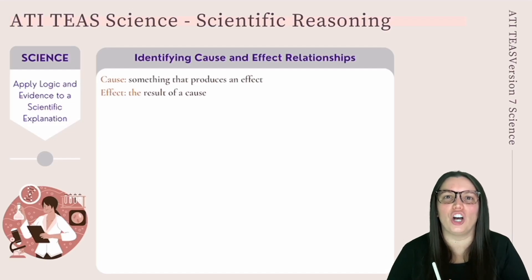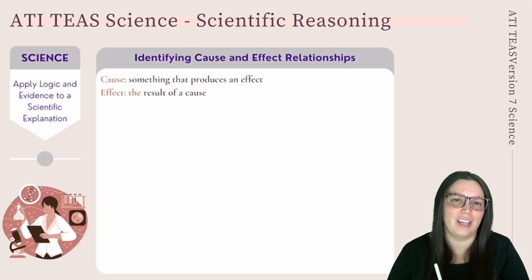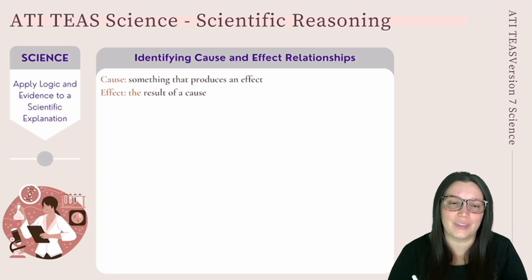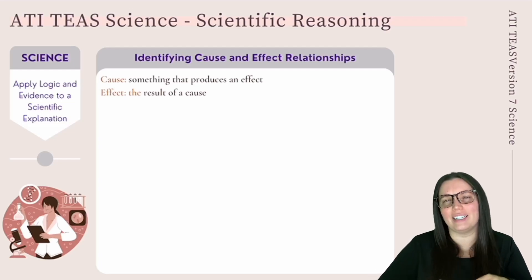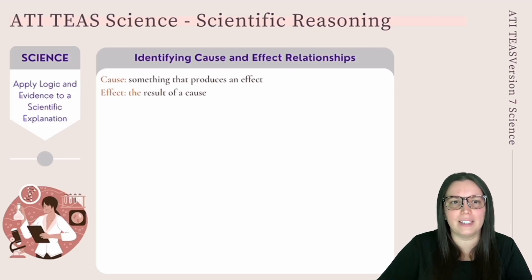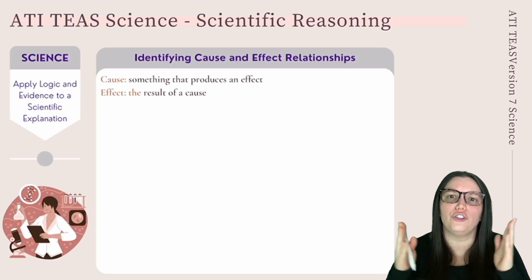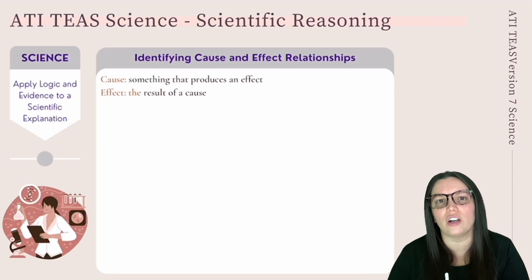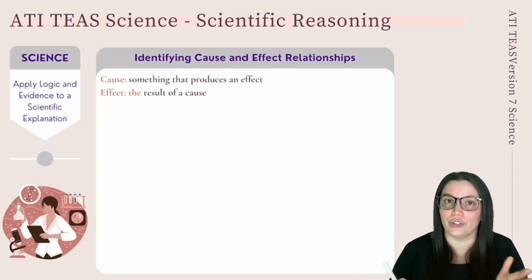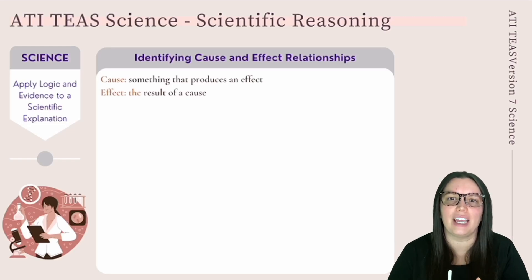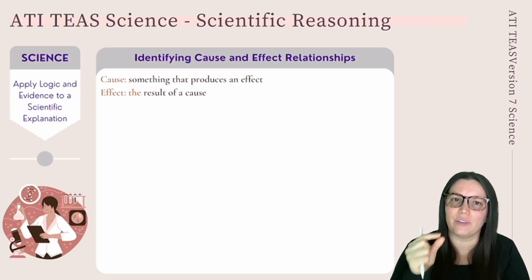Let's talk about cause and effect relationships. A cause is something that produces an effect, and an effect is the result of that cause. Scientists must use empirical evidence to identify cause and effect relationships. Using the drug example, scientists need to identify whether the medication is actually working on that specific disease.